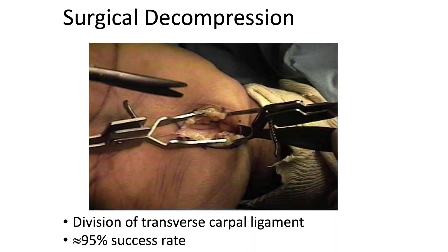Surgery — division of the transverse carpal ligament — is a very successful procedure if the diagnosis is correct. It's done under local anaesthetic, takes less than five minutes, and the patient has a bandage on for a couple of weeks before getting the hand moving again. It can be quite sore for several weeks, so I advise patients with manual jobs to plan for six weeks off work, or three to four weeks for lighter jobs. It's a very successful operation for the right person.